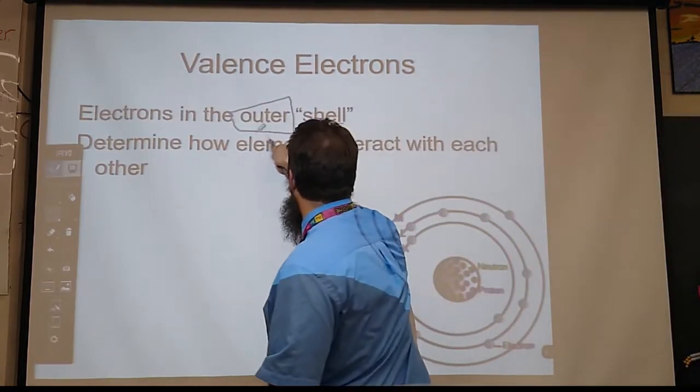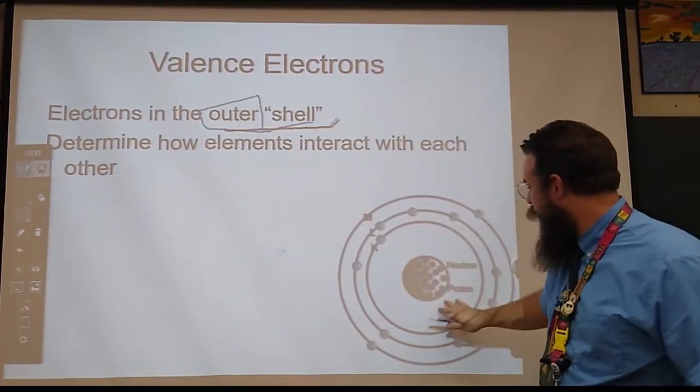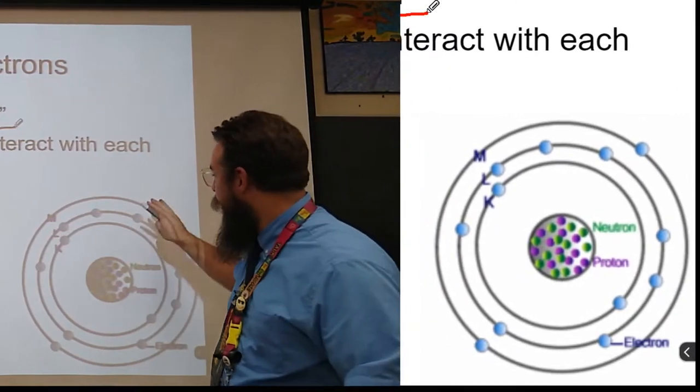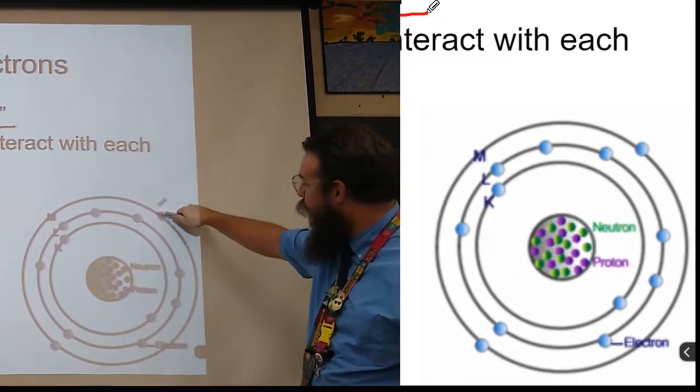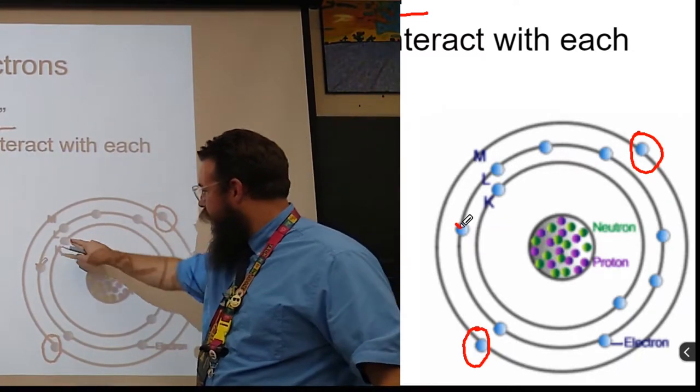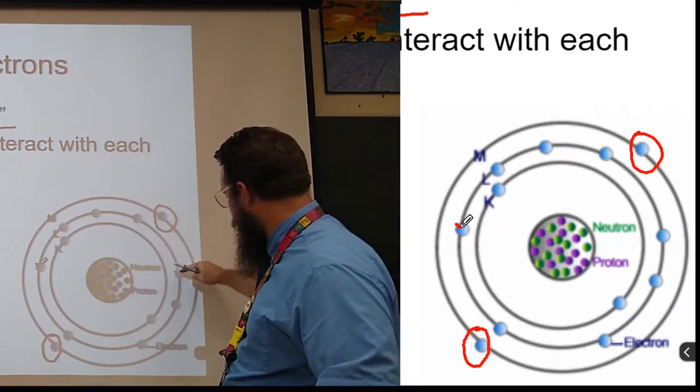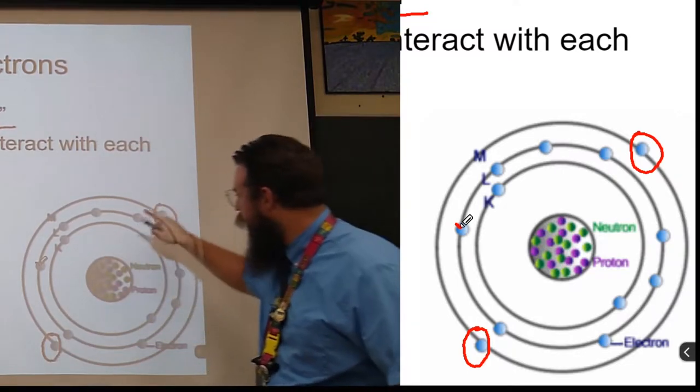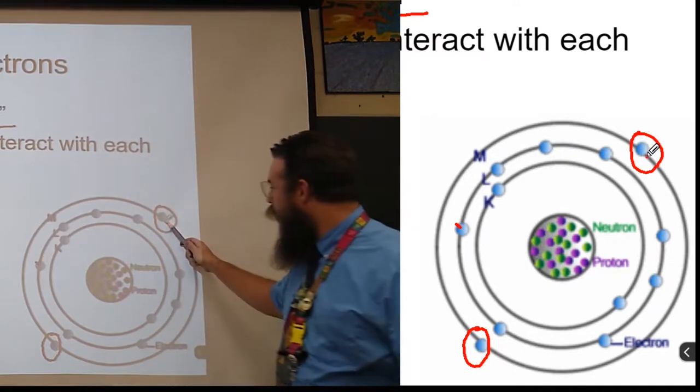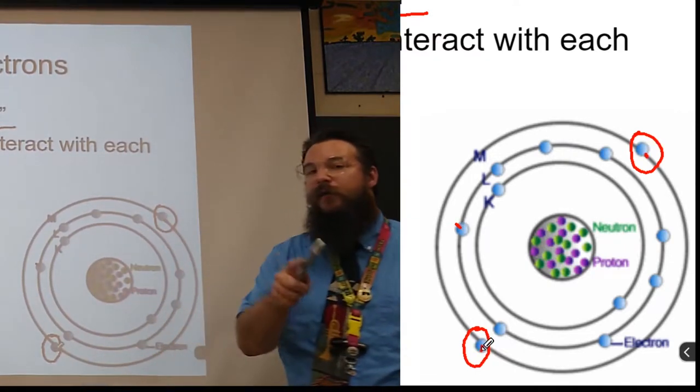So on this Bohr model, which you'll notice is not lithium, not at all, but on this Bohr model right here we have two valence electrons. We have a total of twelve electrons total, but we only have two valence electrons.